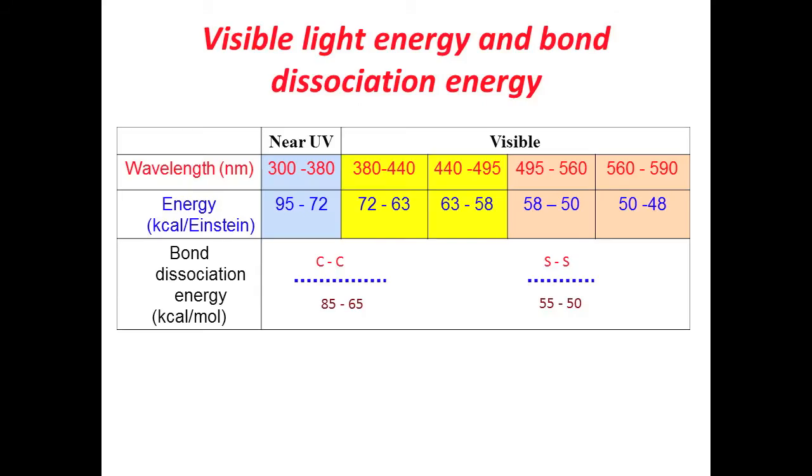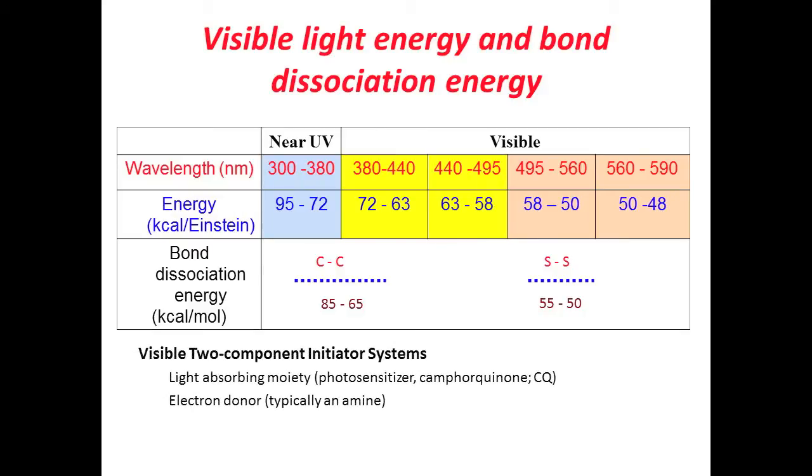Looking at the energy associated with photons at different wavelength ranges, we can see an advantage for UV polymerization in that a photon in that wavelength range is sufficient in terms of energy to directly cleave a carbon-carbon double bond and generate free radicals, whereas the visible light range of 400 to 500 nanometers produces less energetic photons not capable of direct cleavage. These rely on two-component initiator systems.